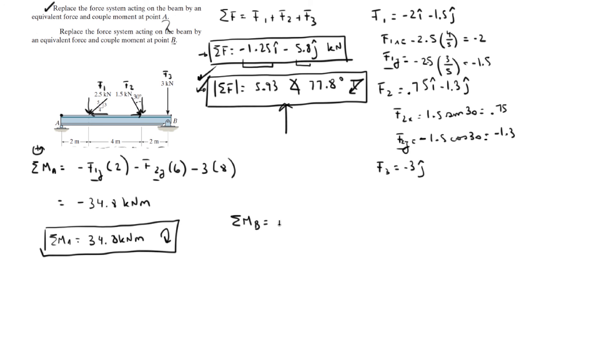So the sum of the moments at B are equal to F1 Y times 6 plus F2 Y times 2, and they're both positive assuming counterclockwise is positive. So this is 11.6 kilonewton meters counterclockwise because it's positive. Final answer for the moment at B, final answer for the moment at A, and the resultant force for A and B is the same given right here.